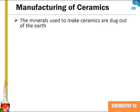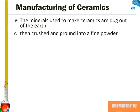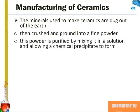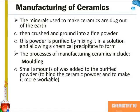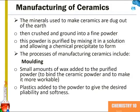The raw materials to make ceramics are dug out of the earth. They are then crushed and ground into a fine powder. This powder is then purified by mixing it in solution and allowing a chemical precipitant to form. Processes of manufacturing ceramics include molding, where small amounts of wax are added to the purified powder to bind the ceramic powder and to make it more workable, or plastics can be added to the powder to give it a desired pliability and softness.